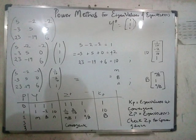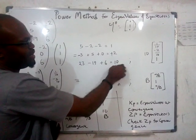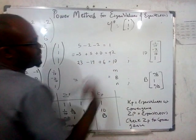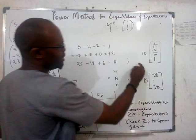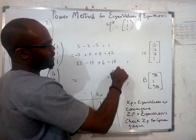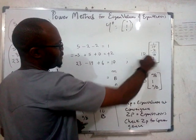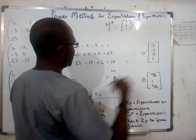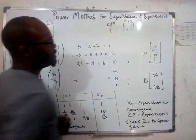Now look at the values that you have — which one is the biggest number? The biggest number is 10. So factor 10 out. When you factor 10 out you divide through by 10. When you divide through by 10 you have: 1 over 10, 2 over 10, and 10 over 10 which gives you one.